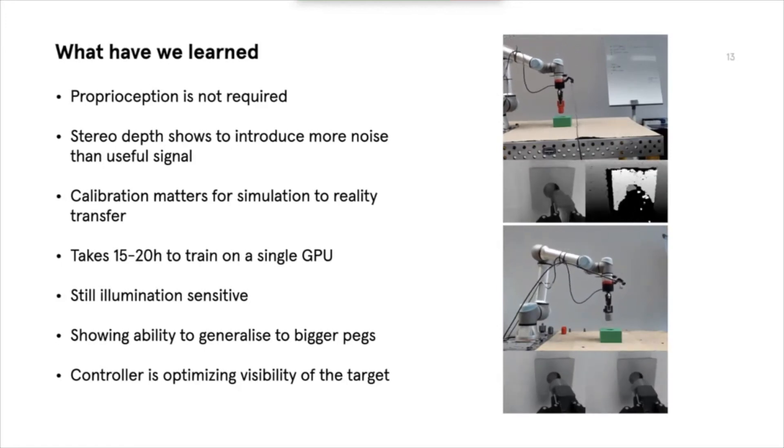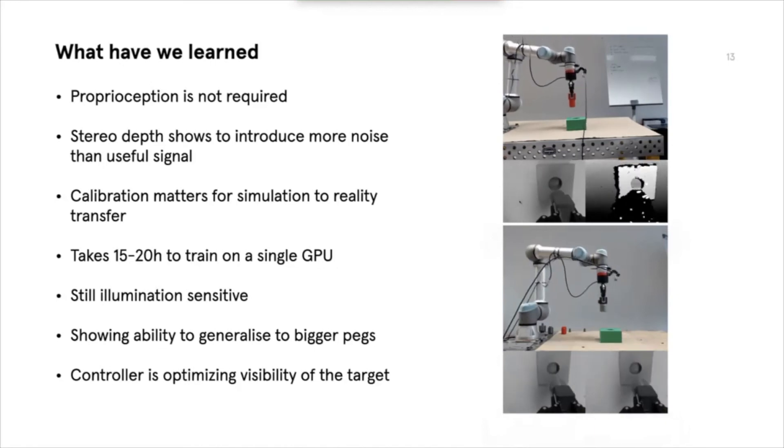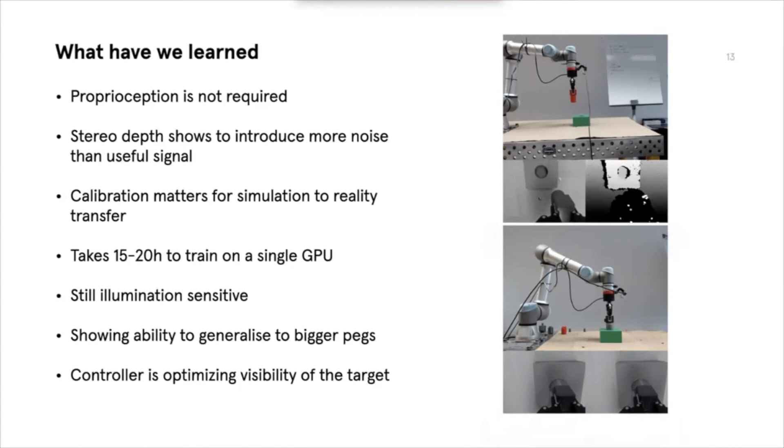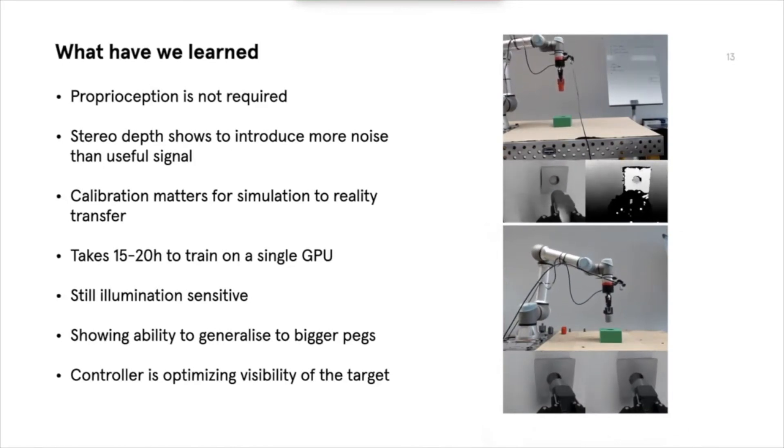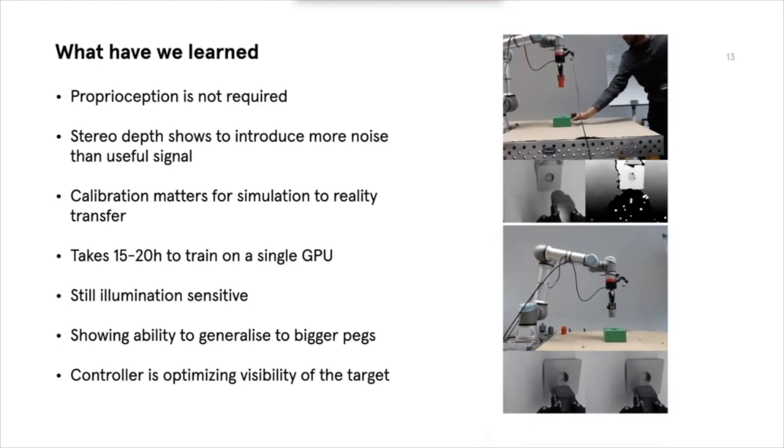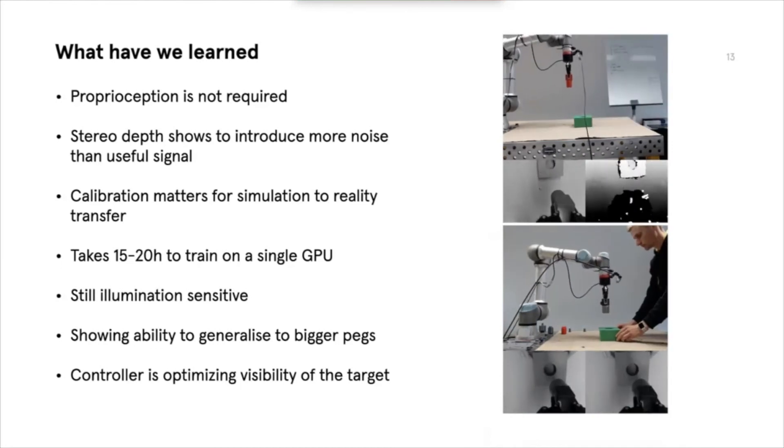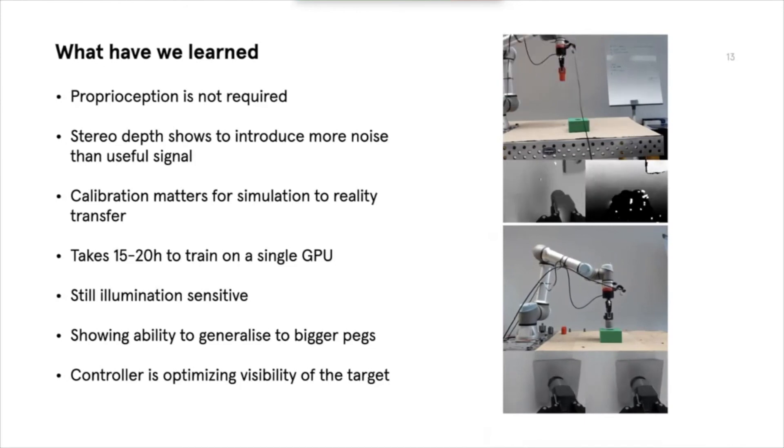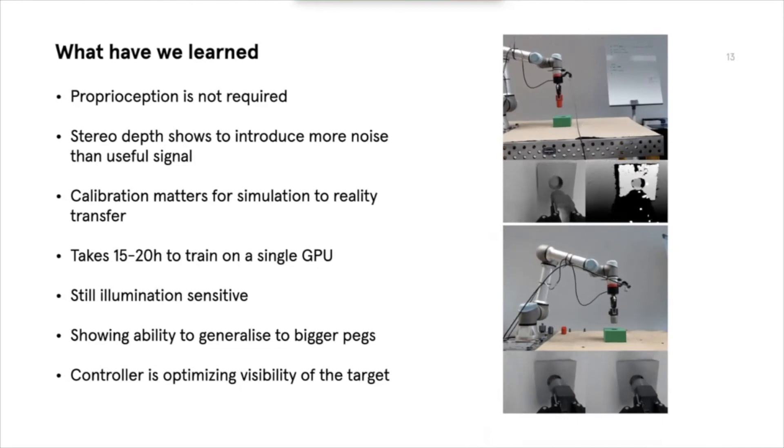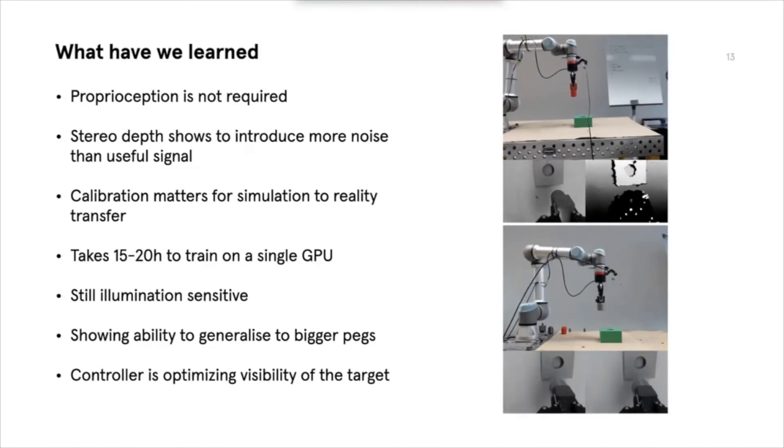And then, yeah, some numbers. So how much does it take to train on GPU? We still experience a lot of illumination sensitivity. So this is just, yeah, we just understand that we need more domain randomization maybe. And also very interesting stuff that we trained it on the peg, which was one centimeter smaller in diameter than the hole. And then we just changed the peg to be bigger and it's somehow inserted again. And so maybe again, it's a heavy coincidence, but seems like it generalized to align the peg to the hole. It doesn't really depend how big is the peg with respect to the hole. And as I said, it looks like the controller is optimizing visibility of the target. Also that there is a strategy to always approach the hole from the side, which makes the situation more visible.